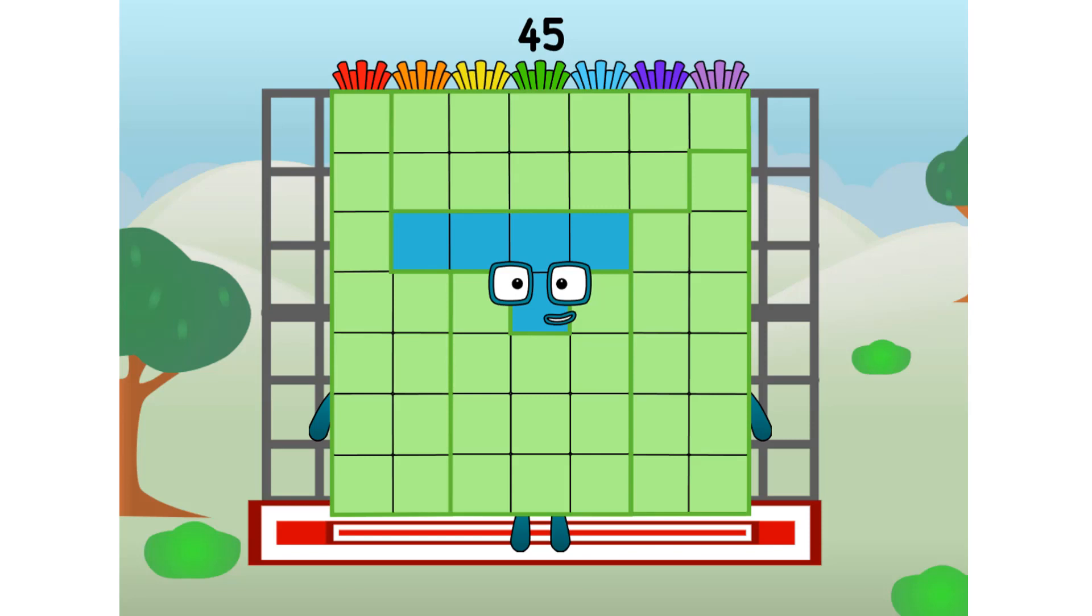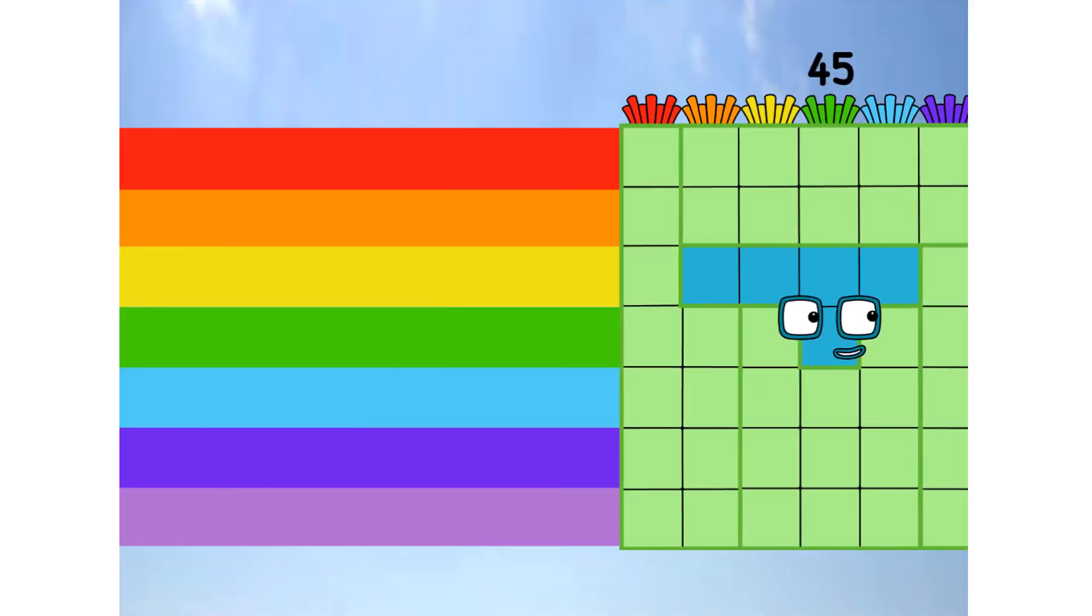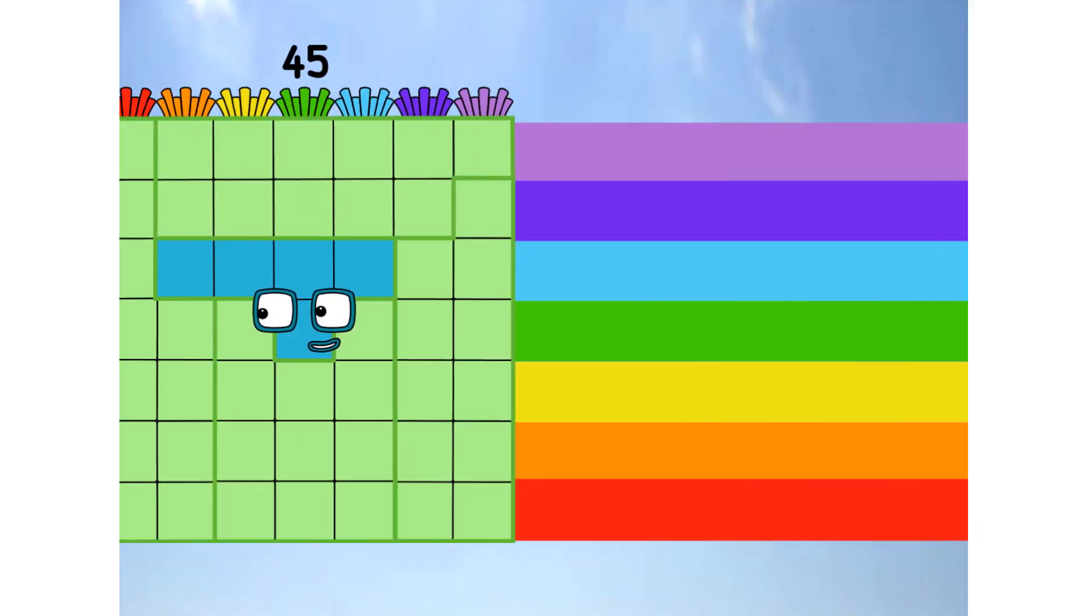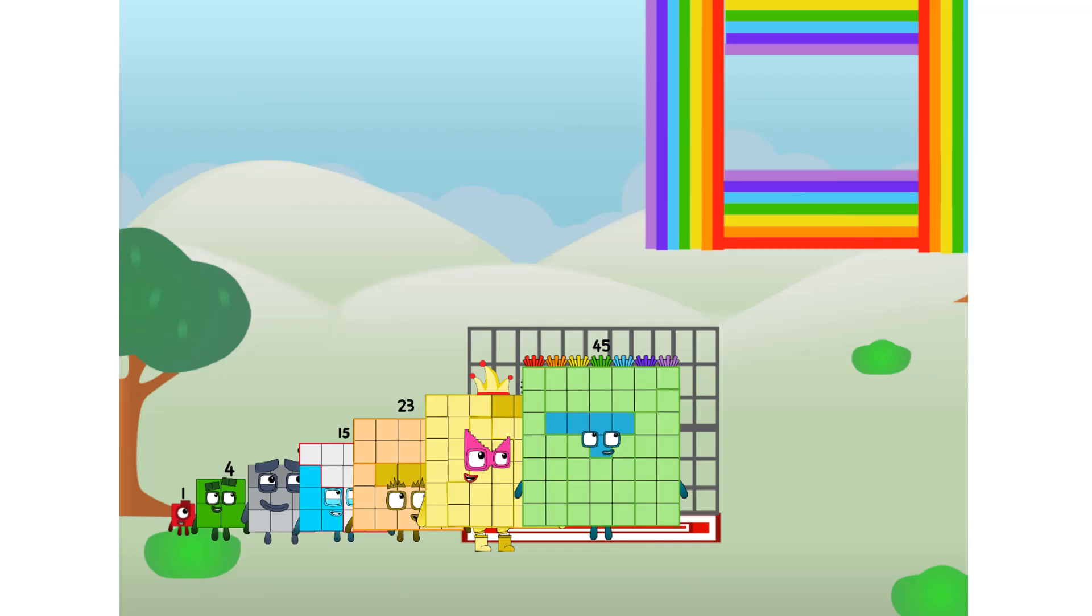45 commencing rainbow test flight. All systems checking out. 7 by 7. Wish me luck. Whoa, oh, yowser! Didn't get that high, but I did just invent the square rainbow. Guess you've got to give it a go to get lucky.